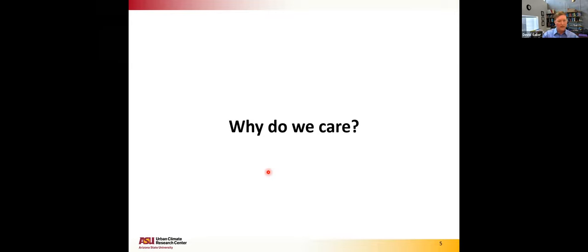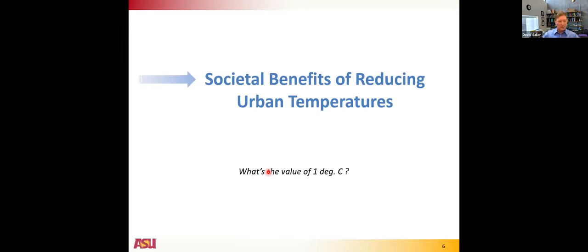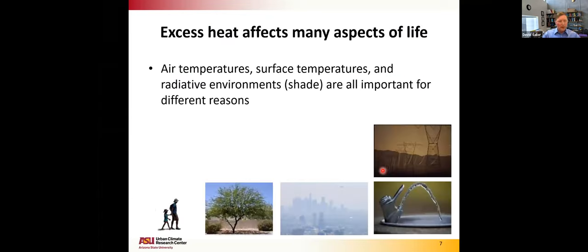Before getting into solutions, I want to talk about why we care. We can't propose effective solutions unless we really understand the problems. When it comes to convincing city and local governments to act, it helps to quantify the relative importance of cooling the city. So I have a section on the societal benefits of reducing urban temperatures. The key question I pose is: what is the value of reducing air temperatures by one degree Celsius?